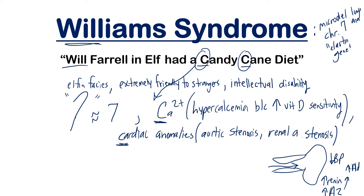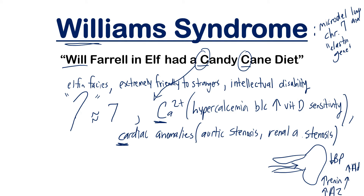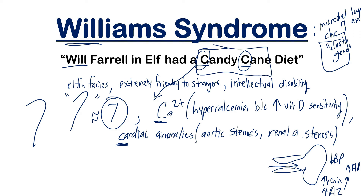Let's recap everything. Will Ferrell in Elf — straight from the First Aid book — gives you elfin facies. Remember that Will Ferrell is extremely friendly to strangers, so bubbly and not fitting in the real world, which helps remember intellectual disability. He had a candy cane diet, and drawing a candy cane looks like the number seven — so this is a microdeletion of the long arm of chromosome 7, where the elastin gene is located.